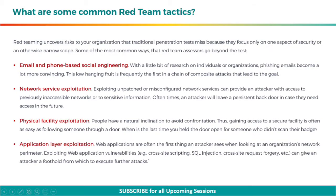Let's discuss the common tactics of red team attacks. Red teaming uncovers risks to your organization that traditional penetration tests miss because they focus only on one aspect of security or an otherwise narrow scope. Some of the most common ways that red team assessors go beyond the test: firstly, email and phone-based social engineering. With a little bit of research on individuals or organizations, phishing emails become a lot more convincing. This low-hanging fruit is frequently the first in a chain of composite attacks that lead to the goal.